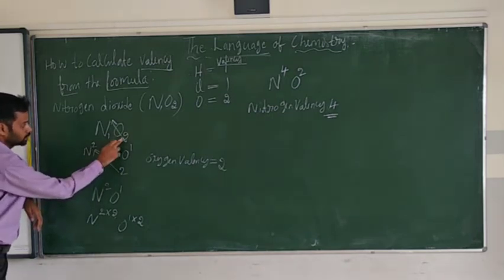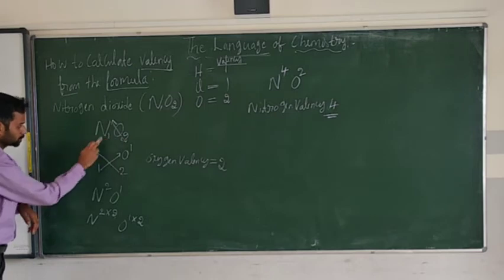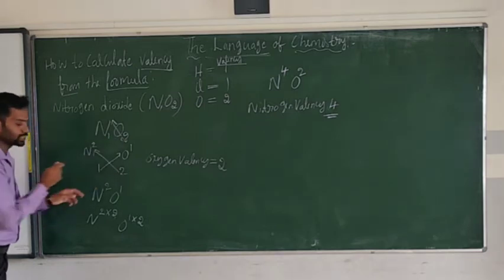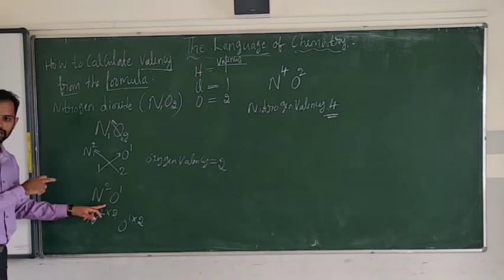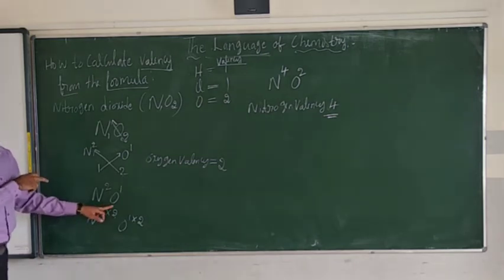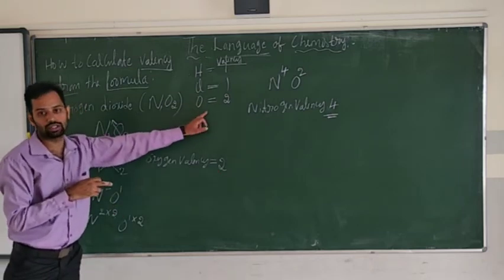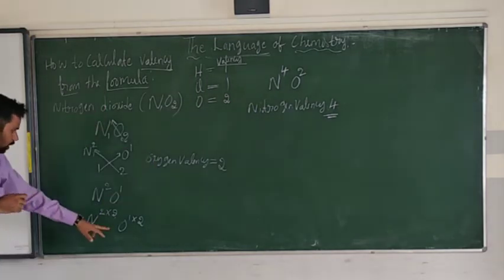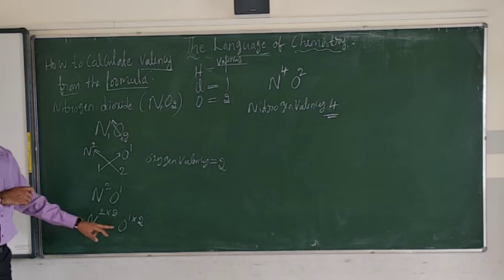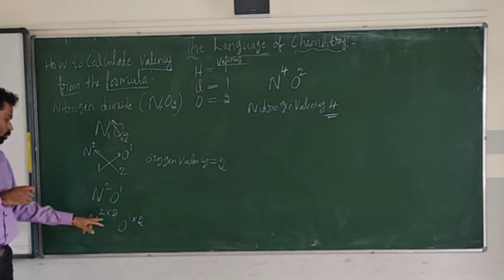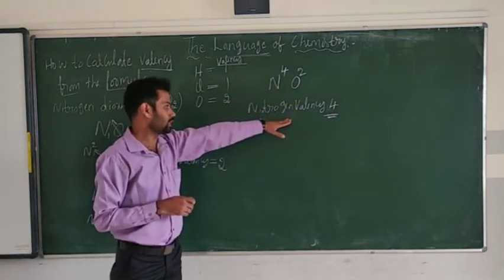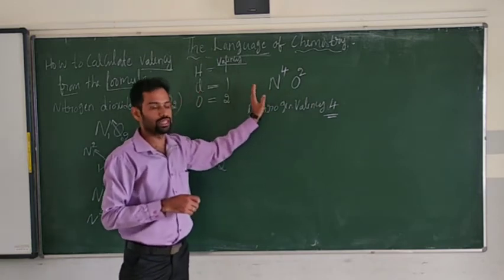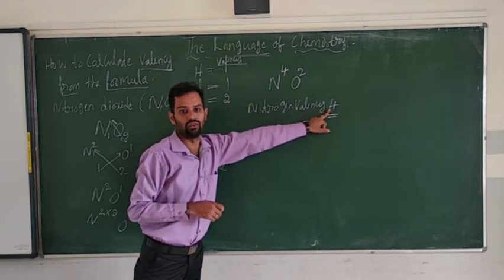So we have oxygen subscript 2 and nitrogen subscript 1. After cross multiplication, nitrogen gets superscript 2 and oxygen gets superscript 1. Then multiply oxygen valency (2) to both superscripts: 2×2=4, 1×2=2. Nitrogen valency in NO2 is 4.